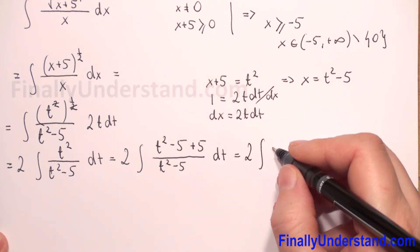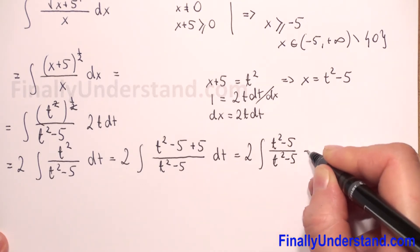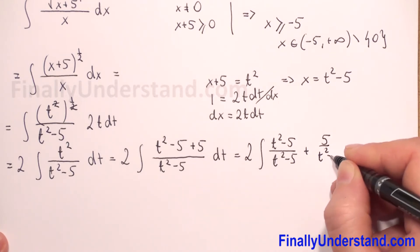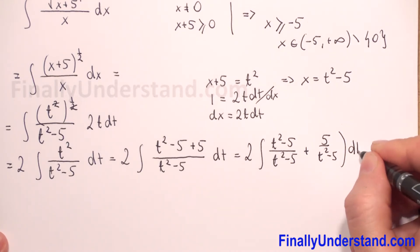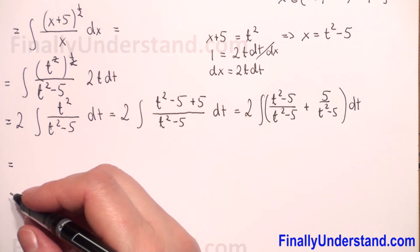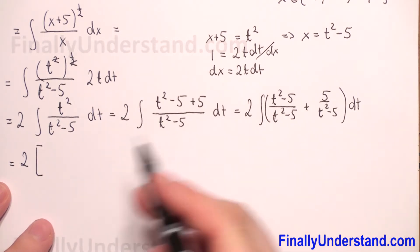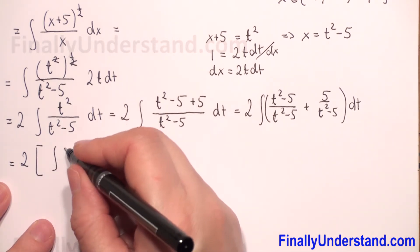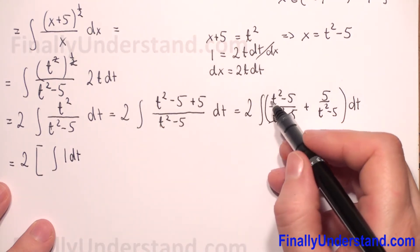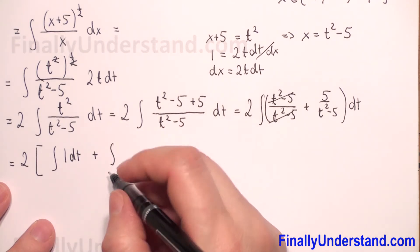We rewrite our expression as a sum of two fractions: the integral of (t squared minus 5) over (t squared minus 5) plus 5 over (t squared minus 5), with respect to t. Since the sum of integrals equals the integral of the sum, we have 2 times the integral of 1 with respect to t — because t squared over t squared minus 5 reduces to 1 — plus the integral of 5 over (t squared minus 5).